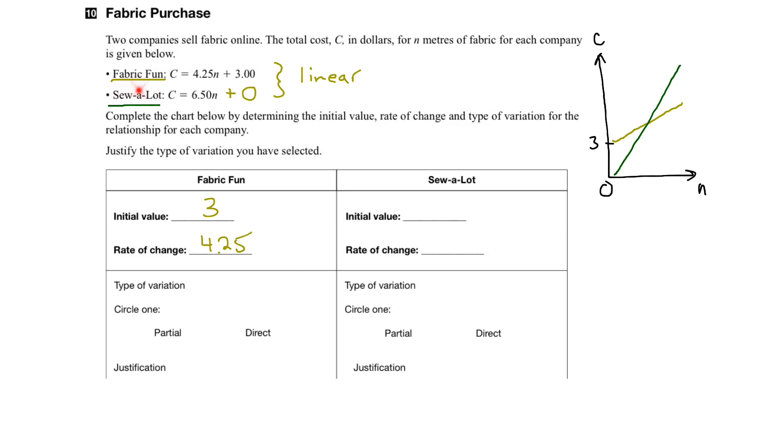And then, for Solalot, initial value would be zero, and the rate of change would be $6.50 per meter. Initial value, zero. Rate of change, $6.50 per meter.